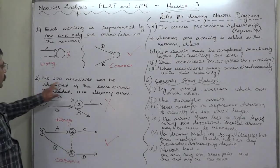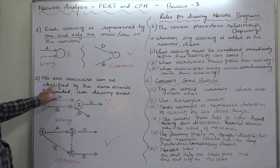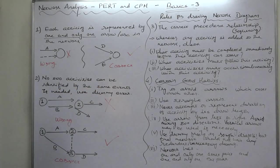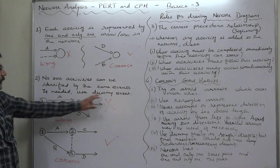If it is necessary to show extension of any activity then we can use dummy. Number two is no two activities can be identified by the same events. If needed use dummy event.